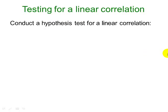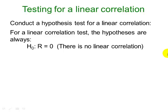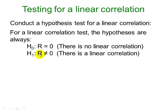Since we've already talked about hypothesis tests, we're also going to look at conducting hypothesis tests to determine whether there's a linear correlation. These tests are a little bit easier because we don't have to do very much work to come up with our null and alternative hypotheses. For linear correlation tests, the hypotheses are always like this: the null hypothesis is that R equals zero, saying there's no linear correlation. The alternative hypothesis is that R is not equal to zero, implying that there is a linear correlation.